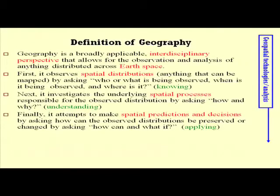Remember, with geography, it's interdisciplinary, and we're going to be pulling data from lots of disciplines. We use it to observe anything that's distributed across space. And if you can map something, then it is distributed across space. We can map the homelands, so we're definitely going to be looking at something spatially distributed. The first thing we'll do is talk about that spatial distribution, the Hispano homeland, where it is and what it's like. We're going to investigate the underlying spatial processes responsible for the observed distribution of the homeland.